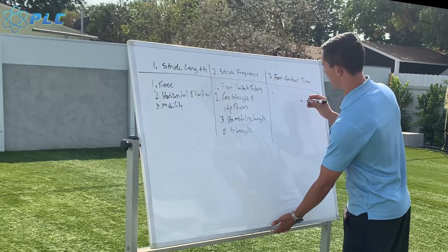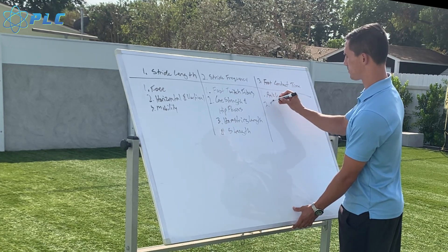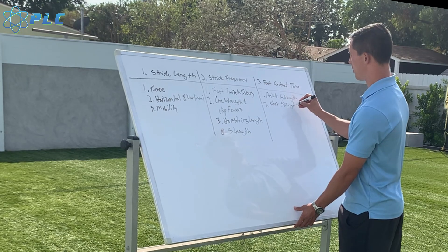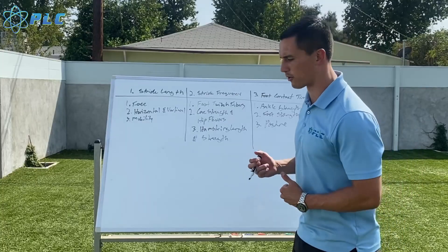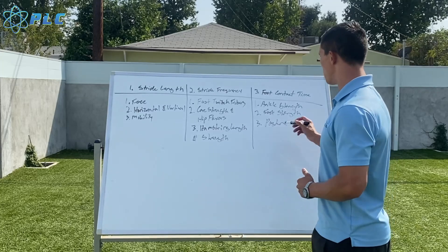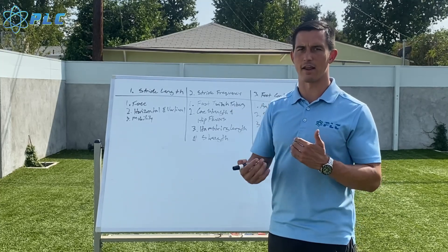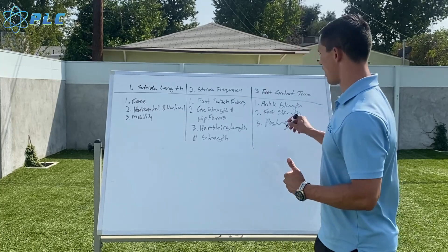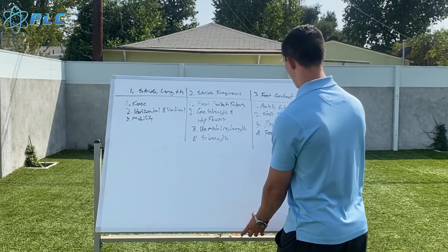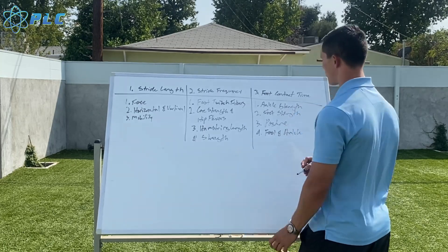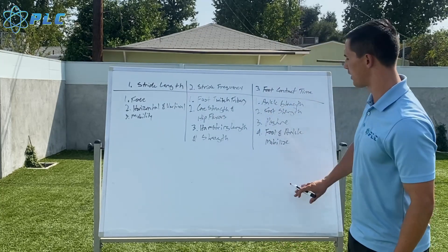The last fundamental is foot contact time, and the big things here are ankle strength, foot strength, and posture. These are really important when it comes to foot contact time. If your posture isn't great — if you're too rounded forward — you're not going to be able to contact the ground with the right fast-twitch response or be able to land, decelerate, and then accelerate back off quickly. A lot of that comes down to posture, ankle strength, and range of motion within the foot and ankle.